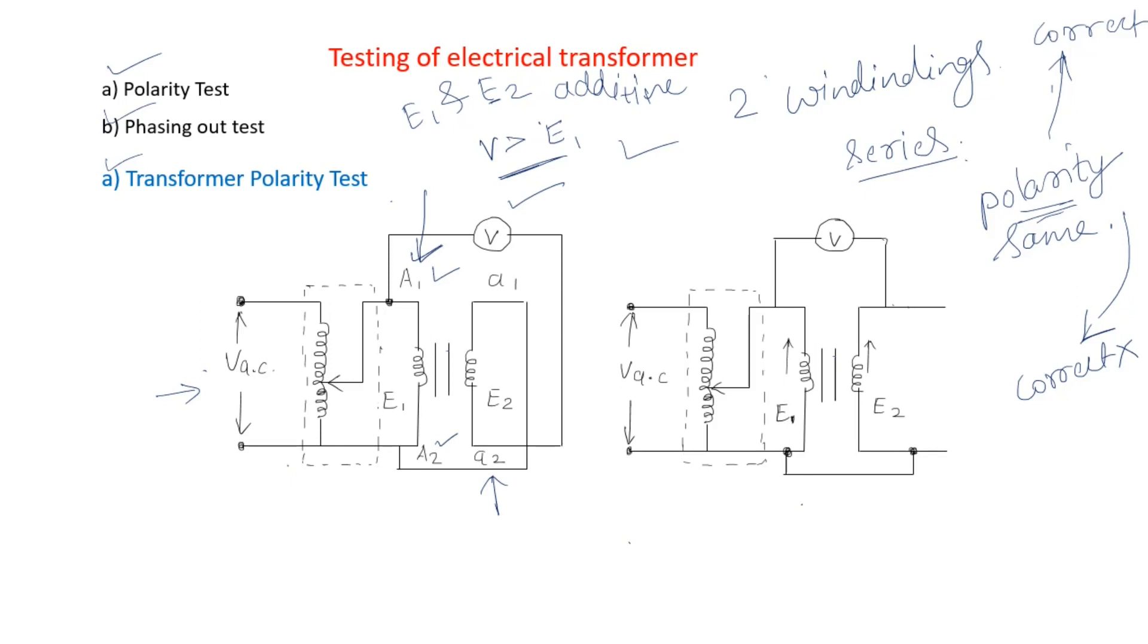So to confirm the correct polarity, in this case V should be less than E1. So in this case, to confirm the correct polarity, V should be less than E1. This is how we carry out our polarity test.